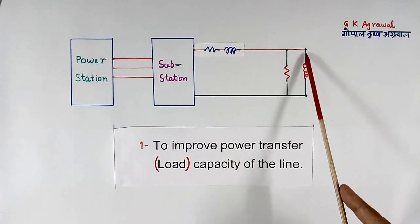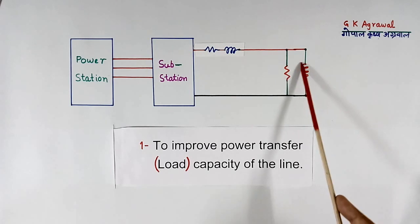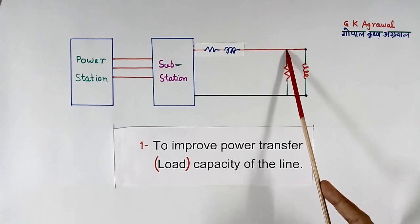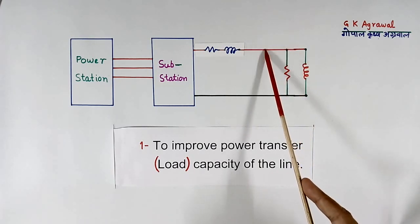Now when reactive current flows here, in this inductor, this current flows here also, which is totally not required. Because of that, capacity of the line is reduced.